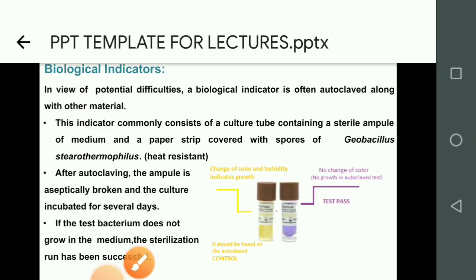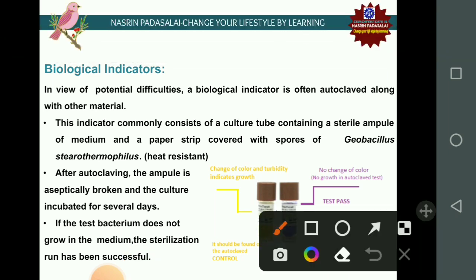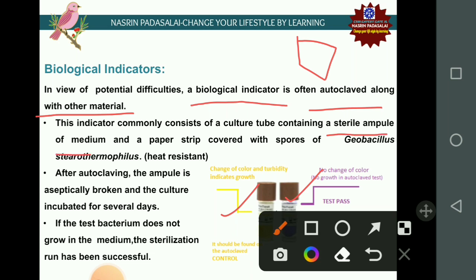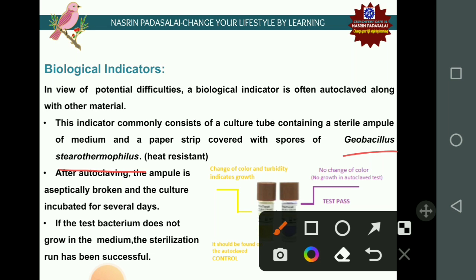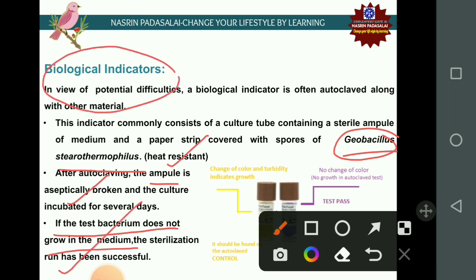To verify sterilization, biological indicators are employed. A biological indicator is a microorganism autoclaved along with the other material, such as media. The indicator consists of a culture tube containing a sterile ampoule of medium and a paper strip covered by Geobacillus stearothermophilus, a heat-resistant bacterium. After autoclaving, the ampoule is broken aseptically and cultured for several days. If the test bacterium does not grow, the sterilization run is successful.